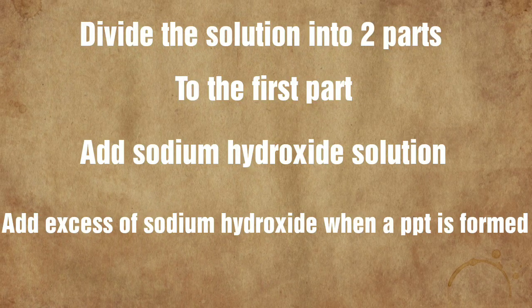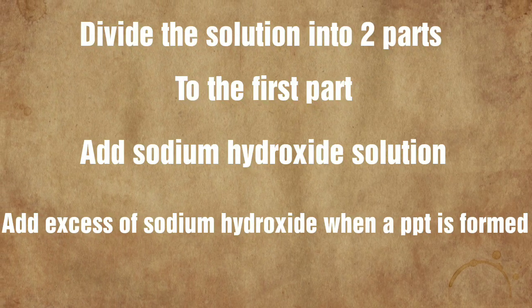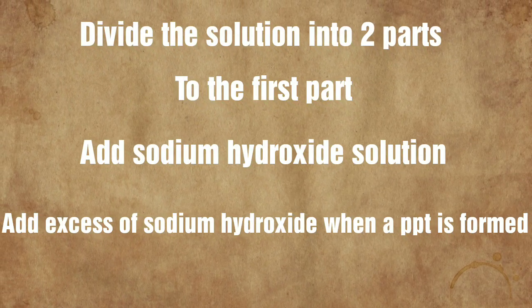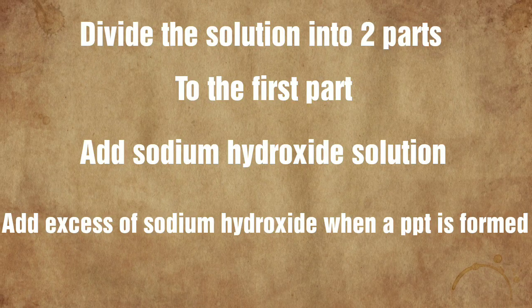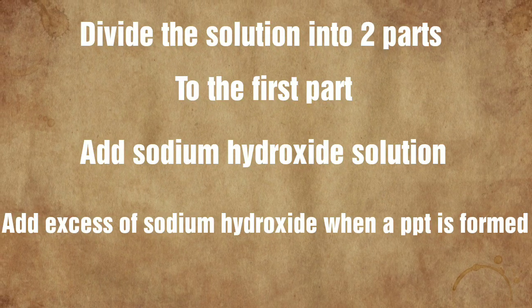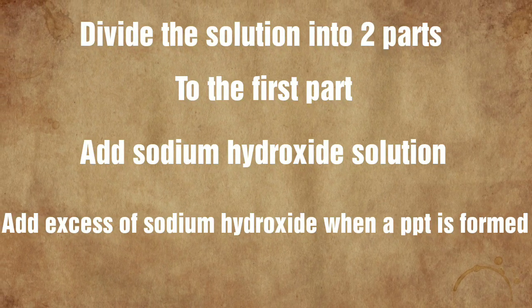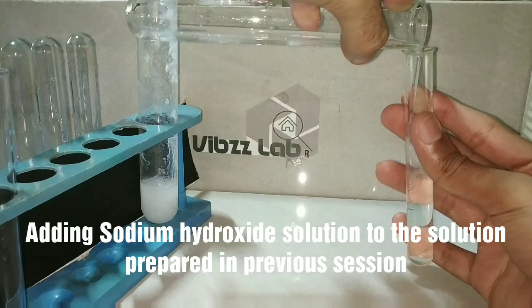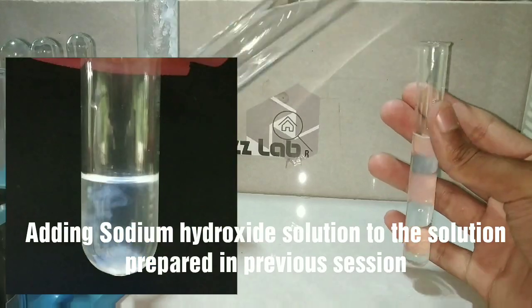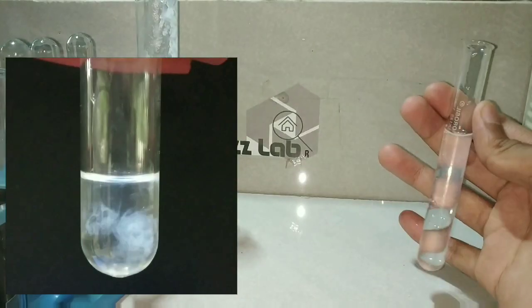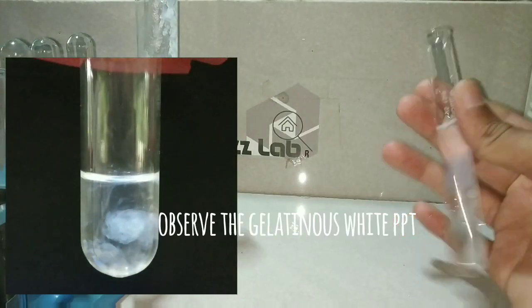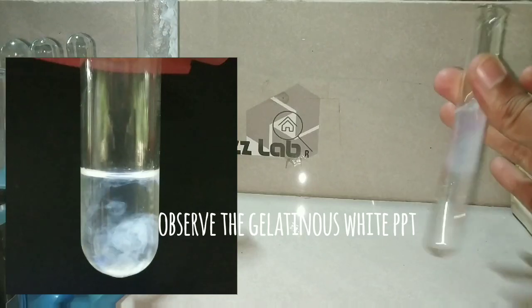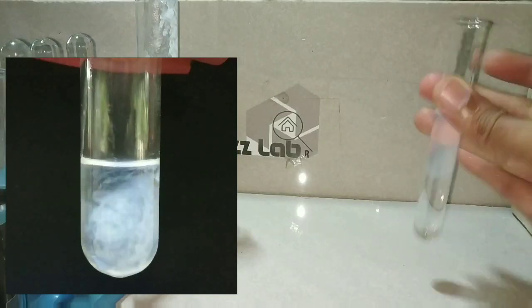Now we will be dividing this solution into two parts and we will be doing the confirmatory test. The first confirmatory test is to add the sodium hydroxide solution. Here I have taken the solution and I am adding sodium hydroxide. You can see that there is formation of the gelatinous white precipitate.